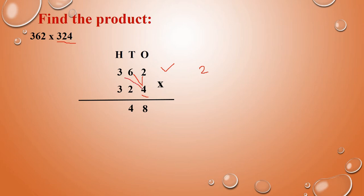Next, this 4 you have to multiply with the hundreds place. So hundreds place is 3. So 3 fours are 12. So 12 plus this carry 2: 12 plus 2 is 14. So write 14.